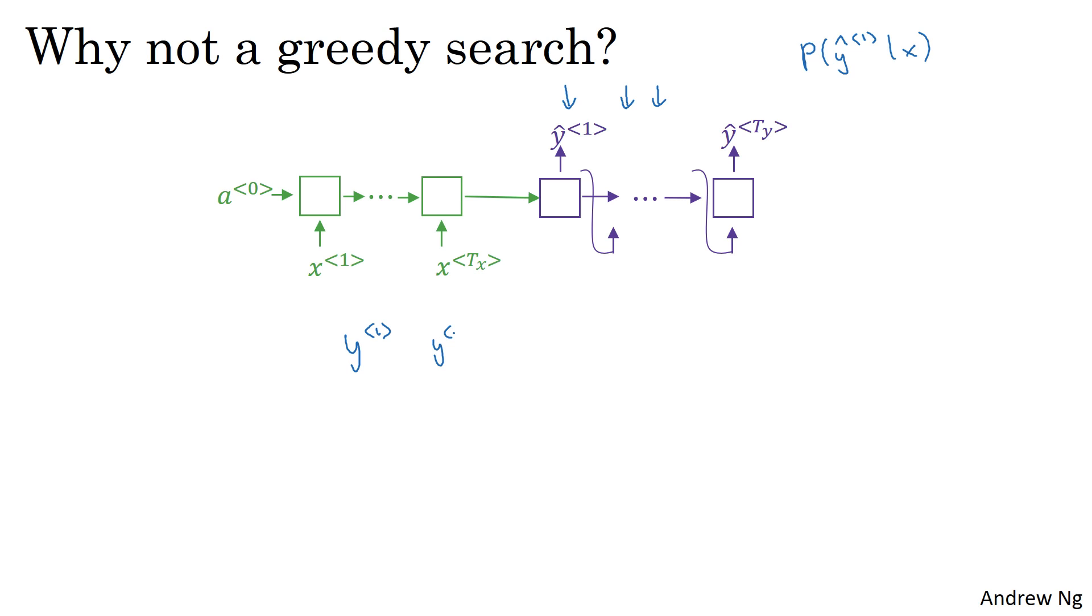And what you would really like is to pick the entire sequence of words, Y1, Y2, up to YTY, with hats there, that maximizes the joint probability of that whole thing. And it turns out that the greedy approach where you just pick the best first word, and then after having picked the best first word, try to pick the best second word, and then after that, try to pick the best third word, that approach doesn't really work.